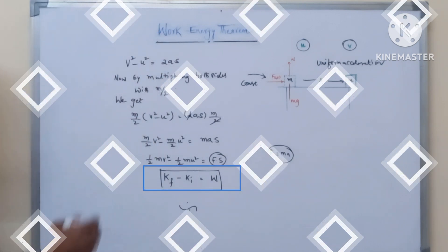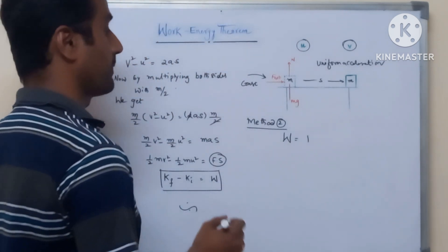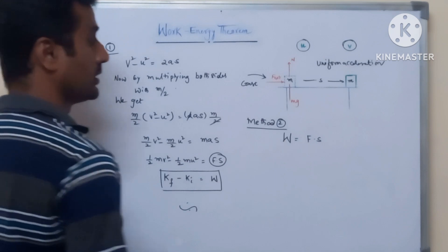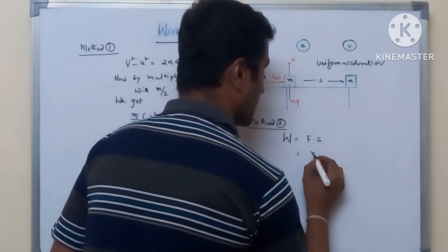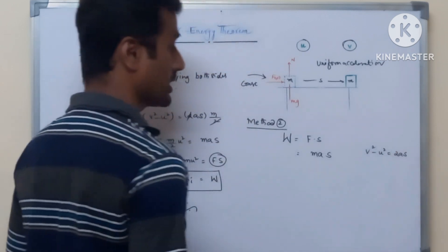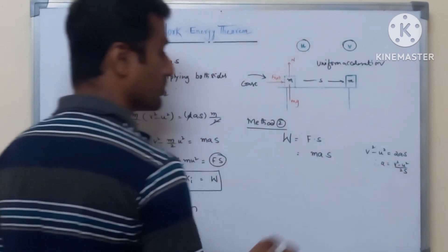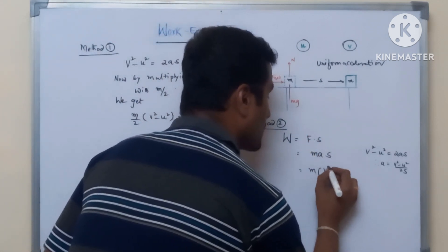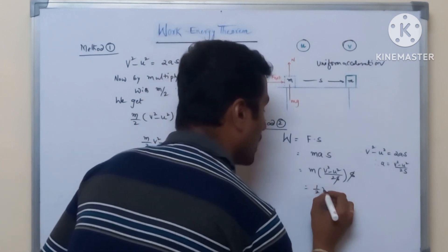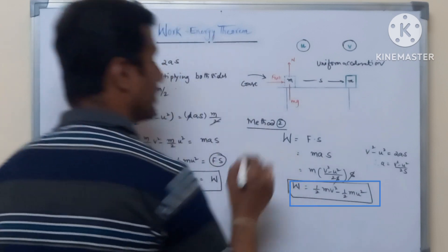The work-energy theorem can also be proved by an alternative method. We know work done equals the dot product of force and displacement, so W equals F times s equals ma times s. From equations of motion, v squared minus u squared equals 2as, so a equals (v squared minus u squared) divided by 2s. Substituting, W equals m times (v squared minus u squared) divided by 2s, times s. The s cancels, giving W equals half mv squared minus half mu squared, which is the change in kinetic energy.